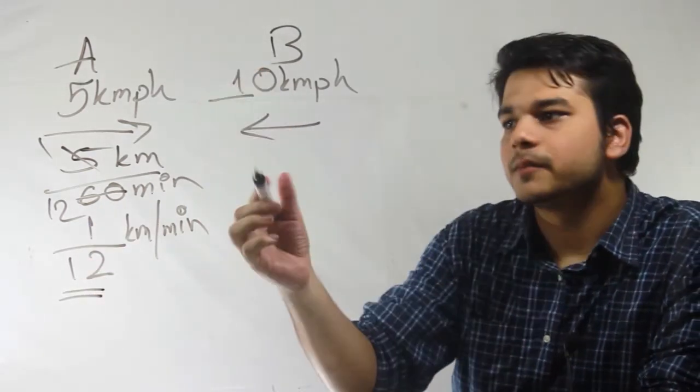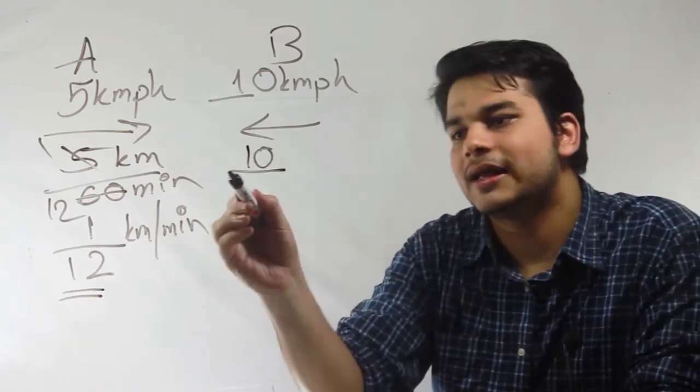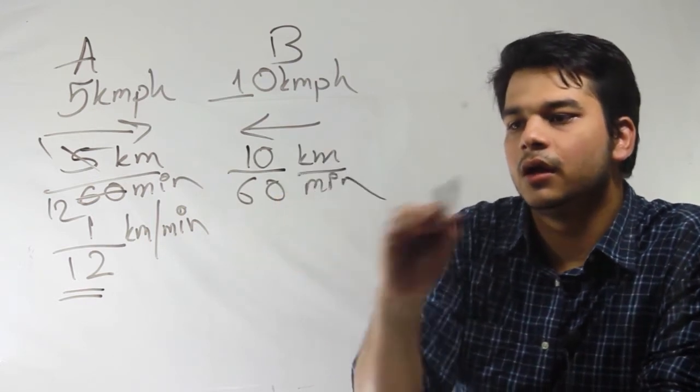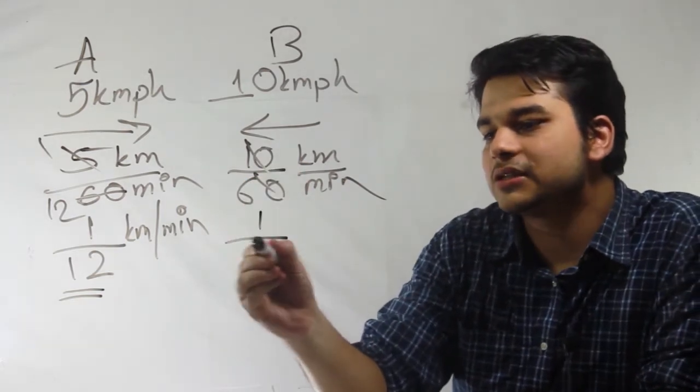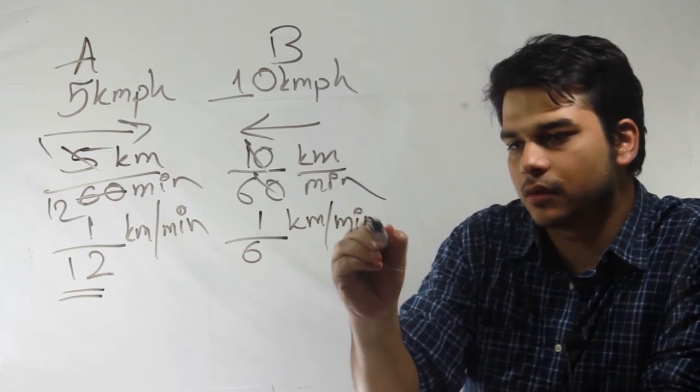In case of B, 10 km it travels in 1 hour, or I can say it as 60 minutes, which gives us one-sixth kilometer per minute. This is the speed of the boat.